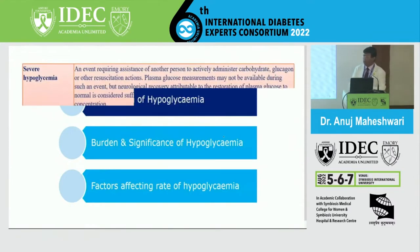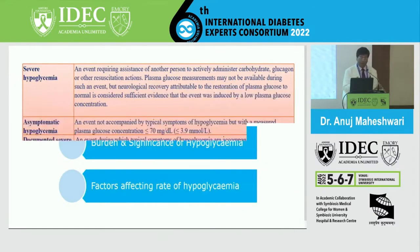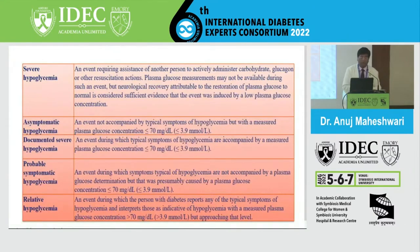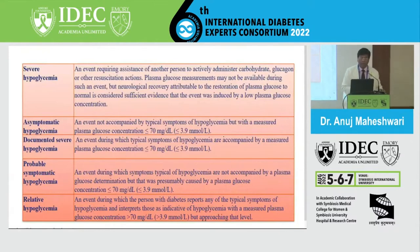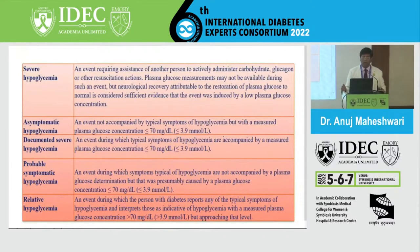When we talk about hypoglycemia, there are multiple stages and aspects to understand. Severe hypoglycemia is an event requiring the assistance of another person to actively administer carbohydrate, glucagon, or other resuscitative action. Plasma glucose measurements may not be available in such situations, and neurological recovery is attributable to restoration of plasma glucose to normal.